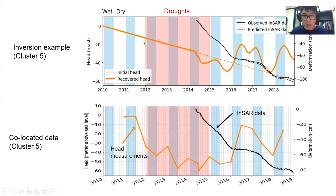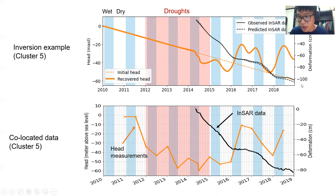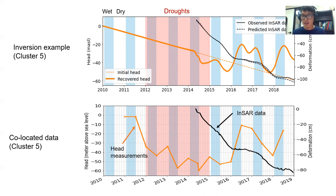Comparing the recovered head with the co-located well data for cluster 5, we see pretty good correlation during the period where we have InSAR data. The recovered head goes up when the well data goes up and down when it goes down, and the temporal sampling of the recovery is much better compared to the very sparse well measurements. This demonstrates the value of using InSAR data to recover head measurements.